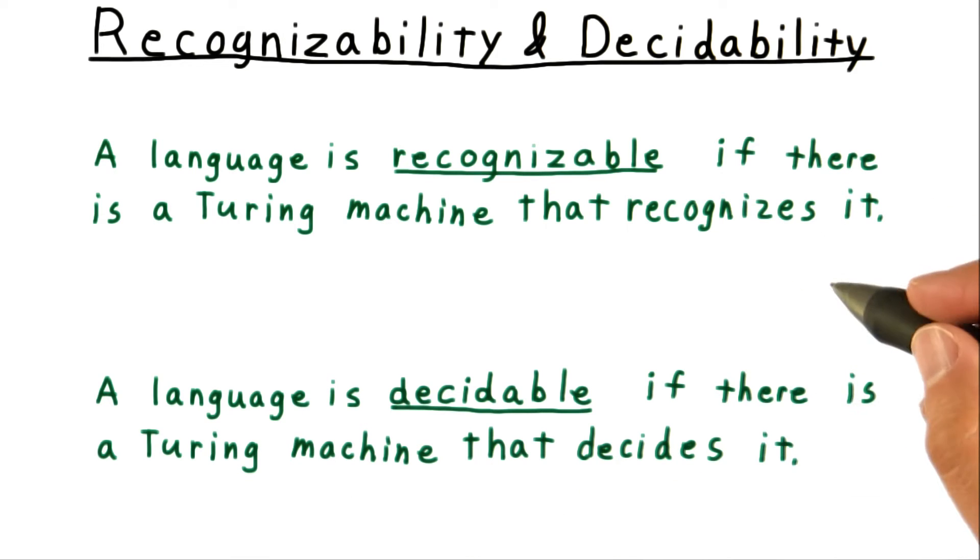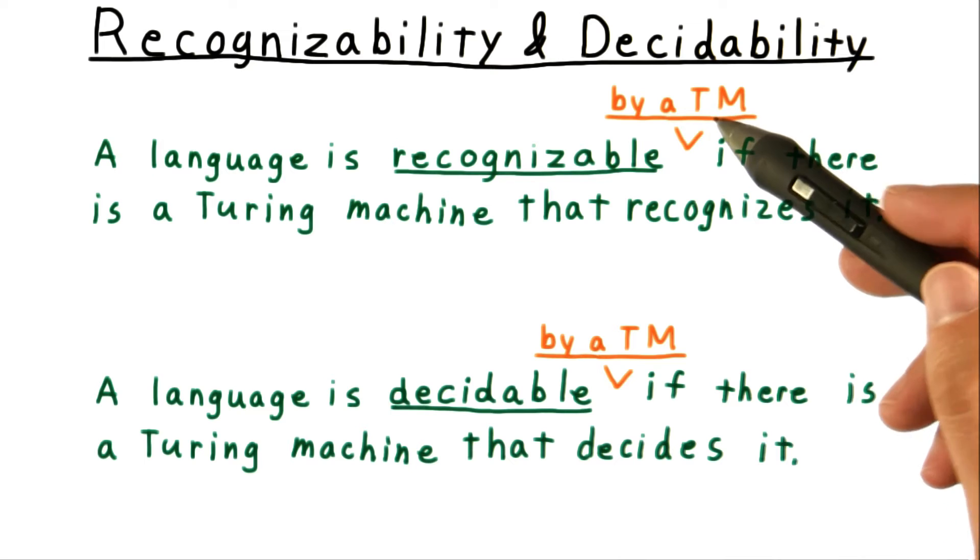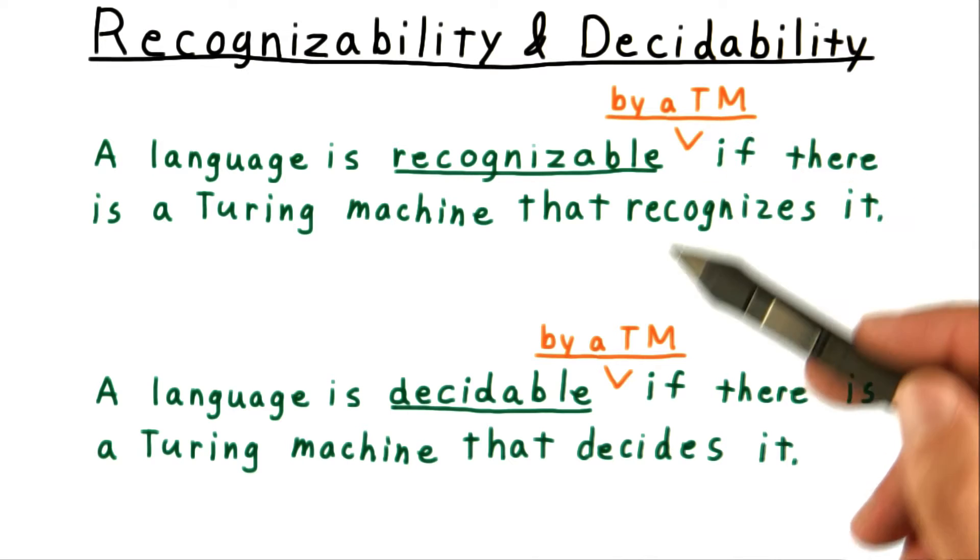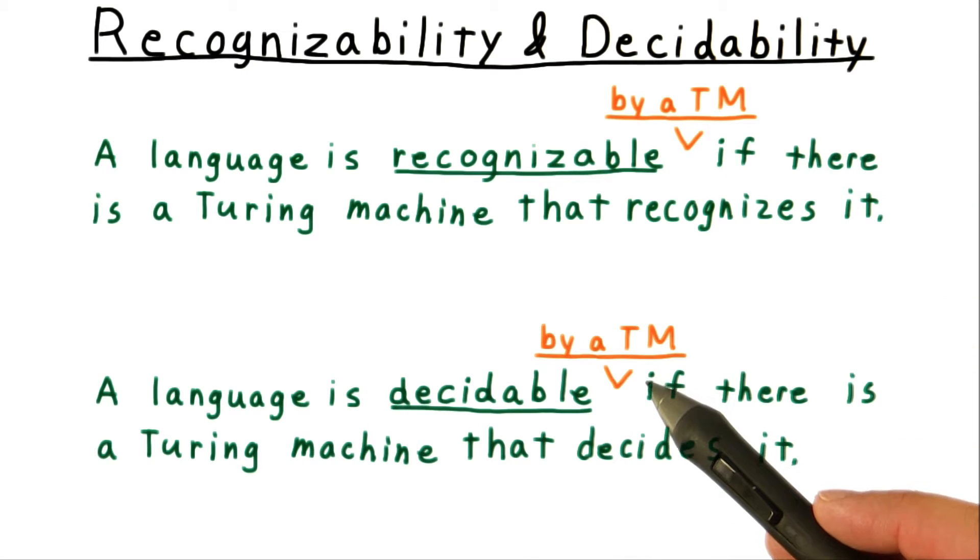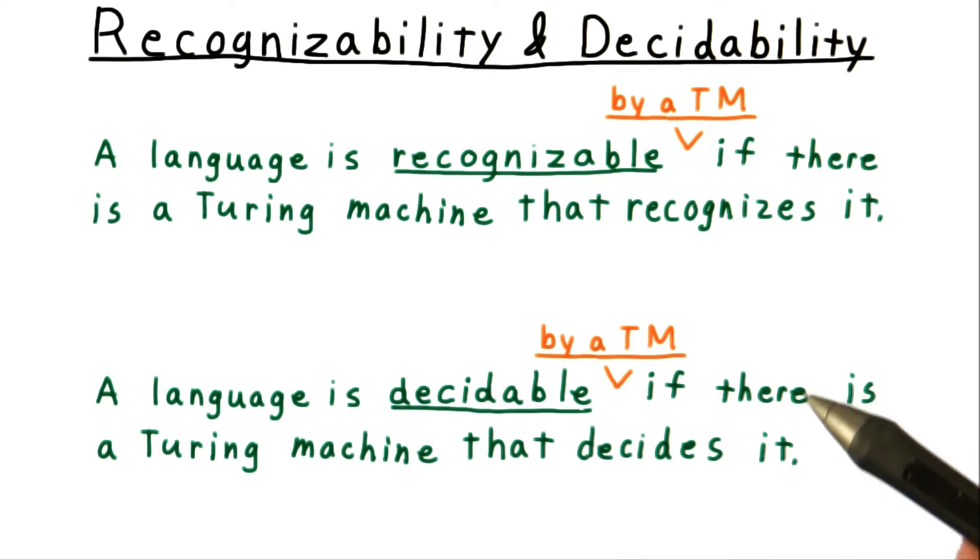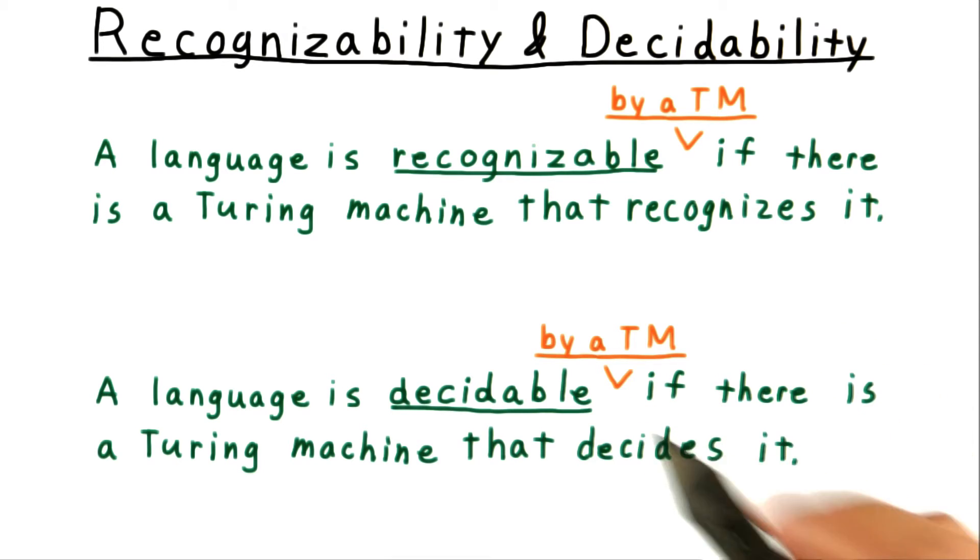Someone might object, shouldn't we say recognizable by a Turing machine and decidable by a Turing machine? Well, of course we could, and the statements would still be true, but we don't.